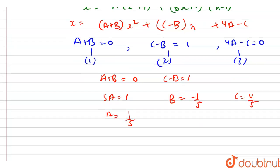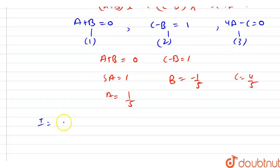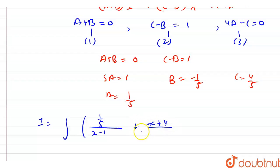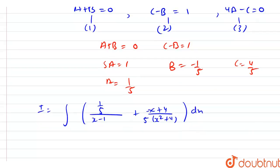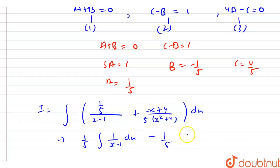Substituting back, I equals the integration of (1/5)/(x minus 1) plus (minus x plus 4) divided by 5(x squared plus 4) dx. This simplifies to (1/5) times integration of 1/(x minus 1) dx minus (1/5) times integration of (x minus 4)/(x squared plus 4) dx.